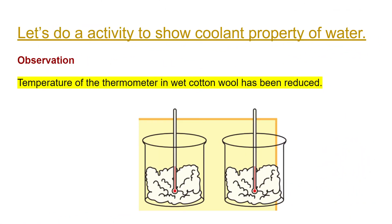Let's do an activity to show the coolant property of water. You will need two beakers of similar size, cotton wool, and two thermometers. Get two beakers of similar size and put the same amount of cotton wool into both beakers. Keep two thermometers inside the beakers and get the readings. Put a little amount of water onto the cotton wool in one beaker and keep for a few minutes. Then get the readings of the thermometers and compare them.